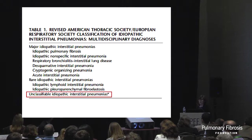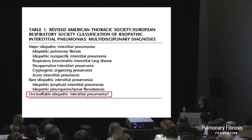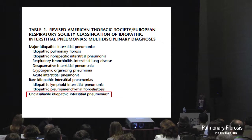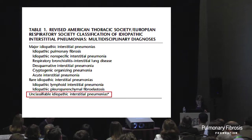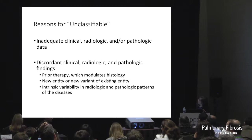Regarding unclassifiable idiopathic interstitial pneumonias, there are two common reasons. One is that the biopsy is targeted to an area that on CT is clearly all honeycombing, which is usually not informative. What you want is the junction between more normal tissue and end-stage disease — a brief conversation with the surgeon ahead of time is often helpful. Unclassifiable IIP can also arise from inadequate clinical, radiologic, or pathologic data, which may simply reflect the natural history of the disease.